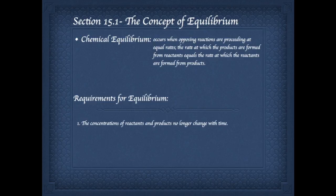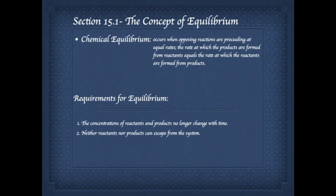There are two requirements for equilibrium to occur. The first is that the concentrations of the reactants and products can no longer change with time. The important thing to keep in mind is that the reaction is still occurring — you just don't see any change in concentration, which is why we call it dynamic equilibrium. The second requirement is that neither the reactants nor the products can escape from the system.